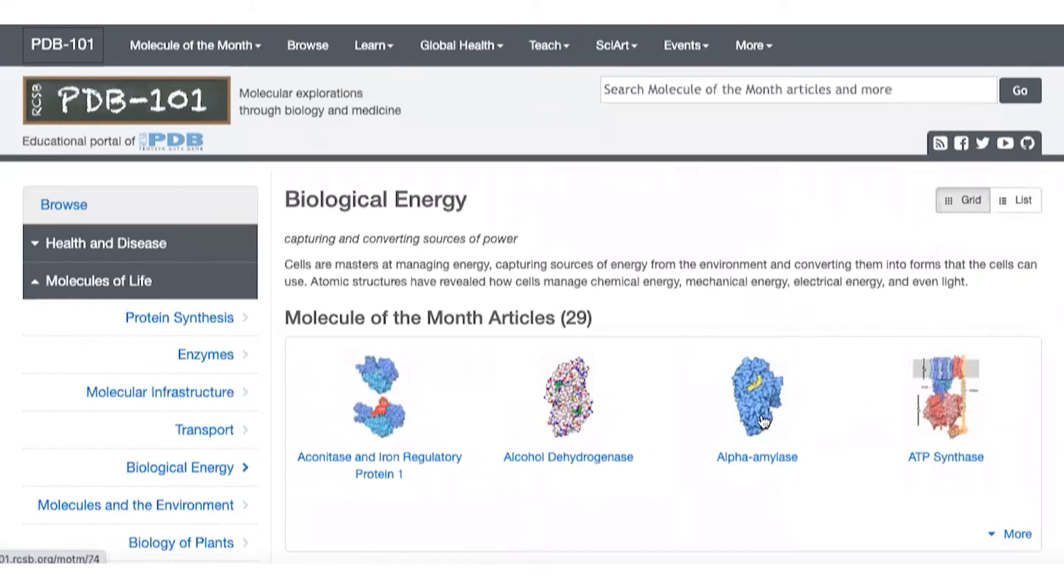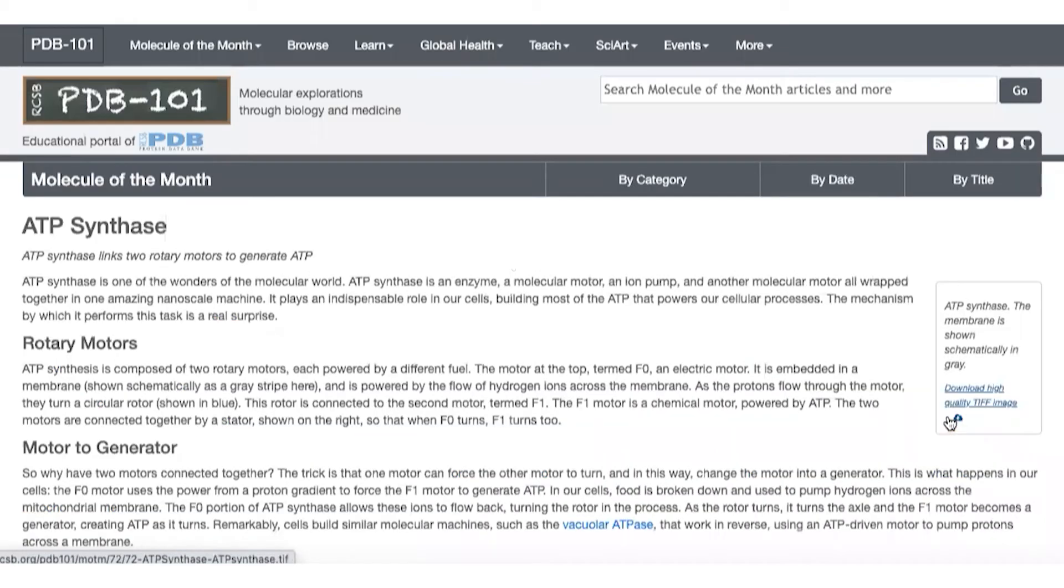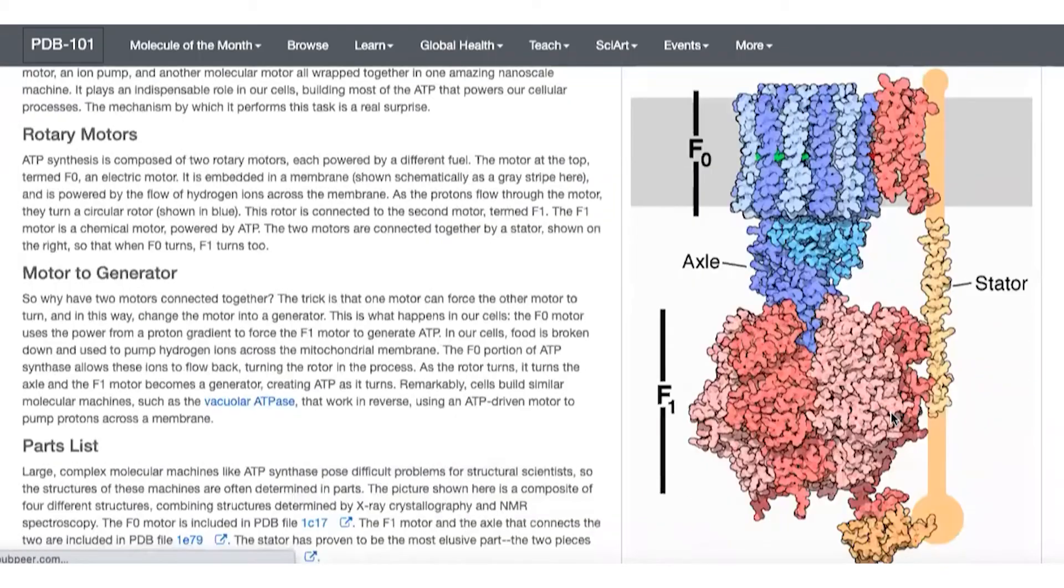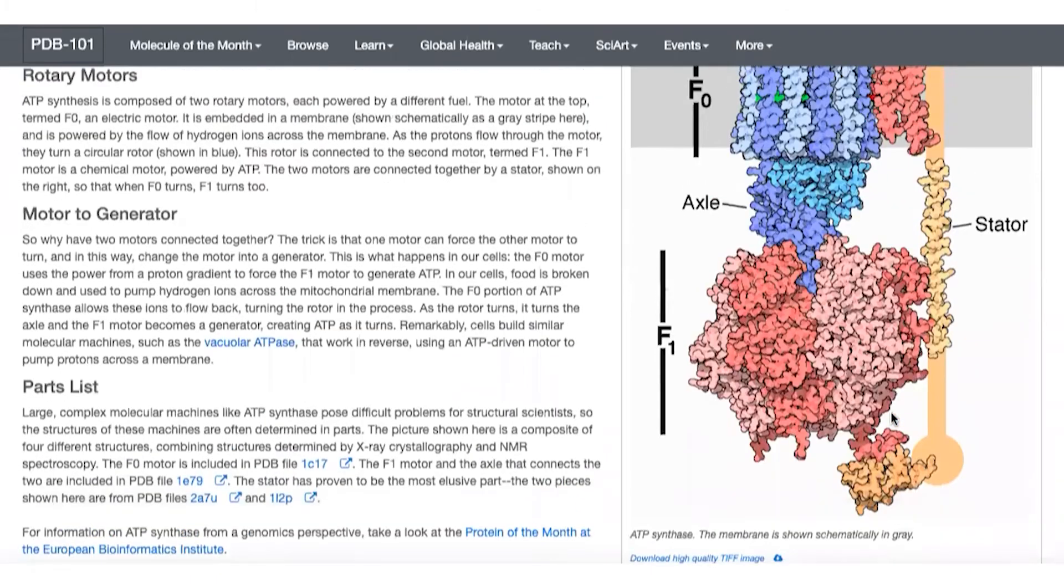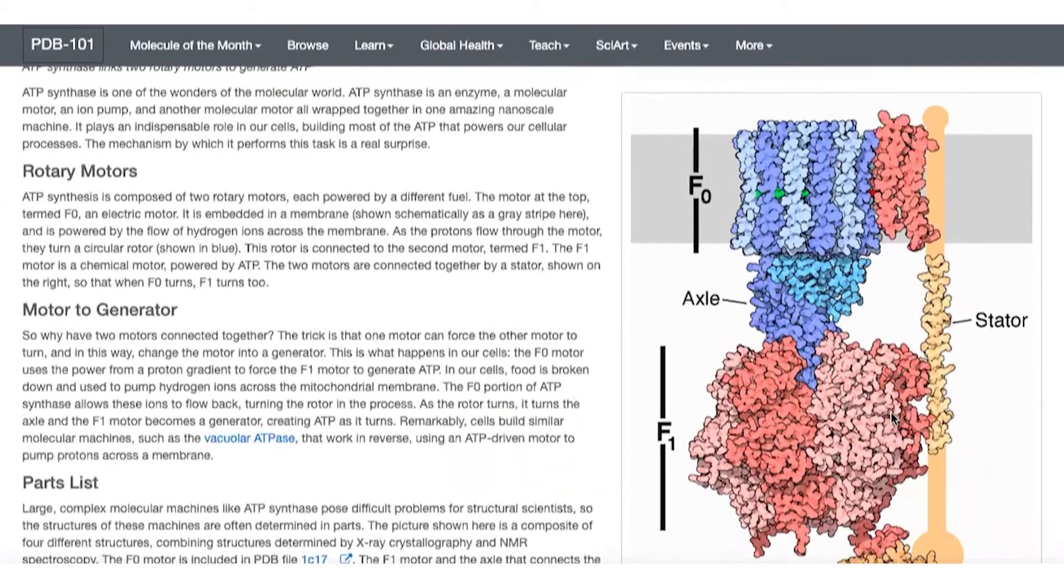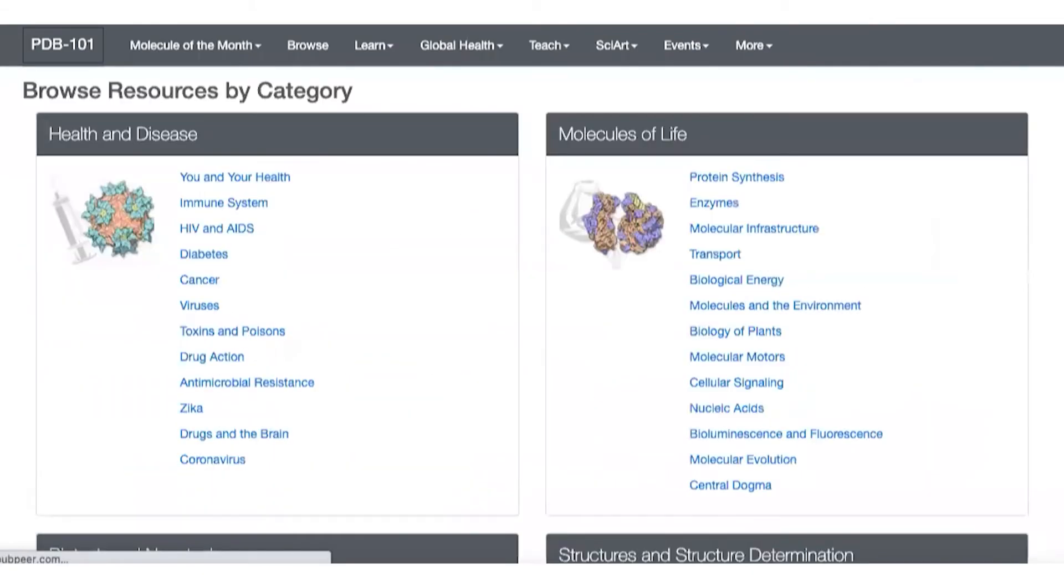Let's look at something called biological energy. It will take you to all these molecules and remember these are atomic structures. What you are literally doing is looking at molecules, their models in a representative manner, but these are real molecules which have been solved, these are not models. For example, this is a famous ATP synthetase which is sitting on the mitochondrial membrane and the shape and the size is very important to generate ATP.